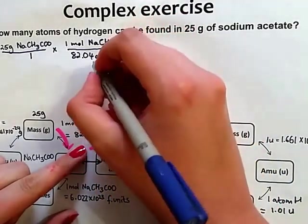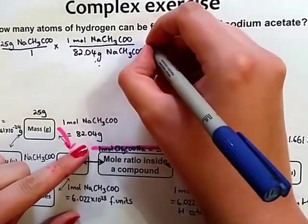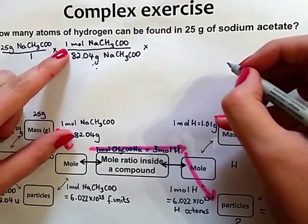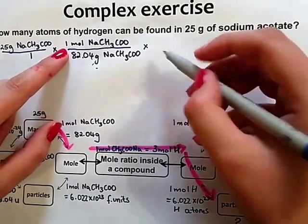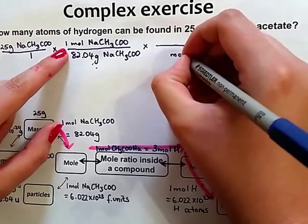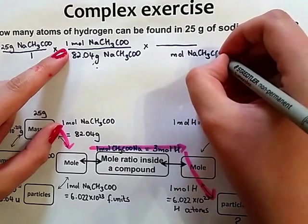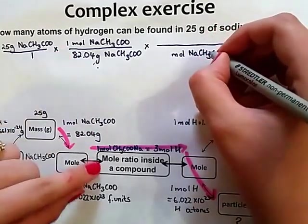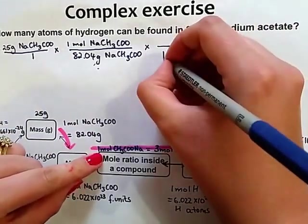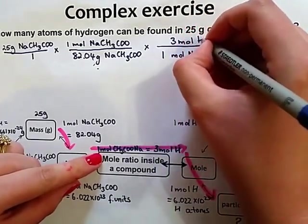Now we can cancel out both the unit and the descriptor. If we've got moles of sodium acetate our next step would have moles of sodium acetate at the bottom. Per 1 mole of sodium acetate there are 3 moles of hydrogen.